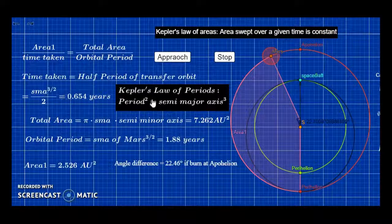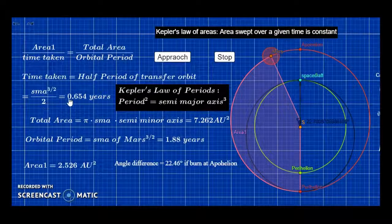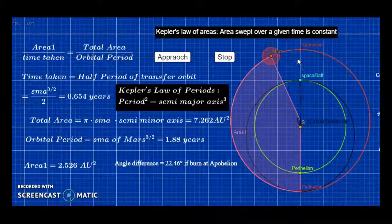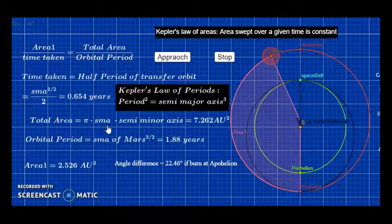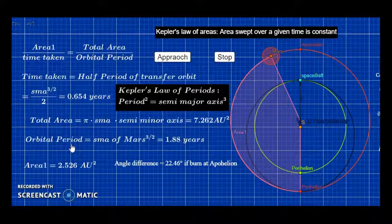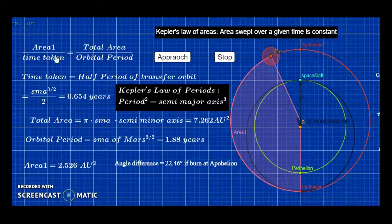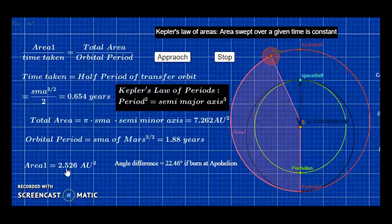Period squared is semi-major axis cubed, and half of that is 0.654 years. The total area swept by Mars is π times semi-major axis times semi-minor axis, which is 7.202 AU². And the orbital period, we can also determine using Kepler's Law of Period. From cross-multiplying, we can determine area 1, and then we can use that to determine the angle.